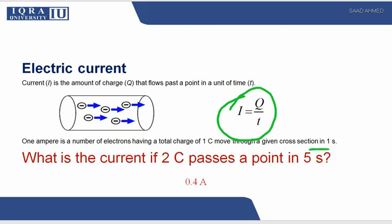One ampere is a number of electrons having a total charge of one coulomb moving through a cross section in one second. So if we put in the value we will find out the current. What is the current if 2 coulombs passes a point in 5 seconds? 2 upon 5 is 0.4 ampere of current. Simple.